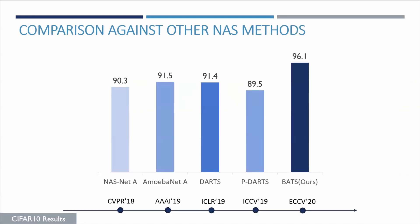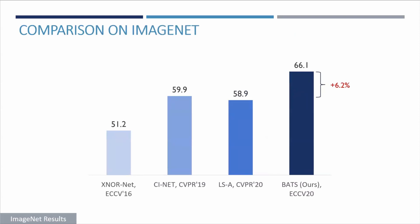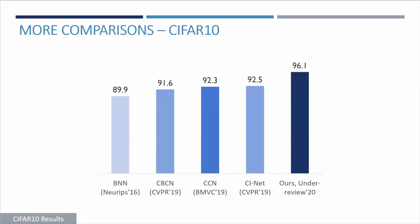As the results show, our method significantly outperforms the current state of the art and NAS methods typically deployed for real networks. On ImageNet, under the same computational budget, our method significantly outperforms prior state-of-the-art by more than 6%. Similar conclusions can be drawn on CIFAR-10, where our method outperforms significantly all prior methods.